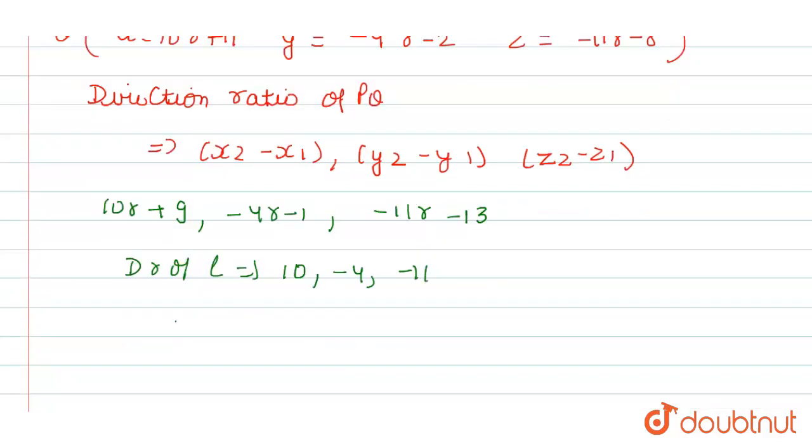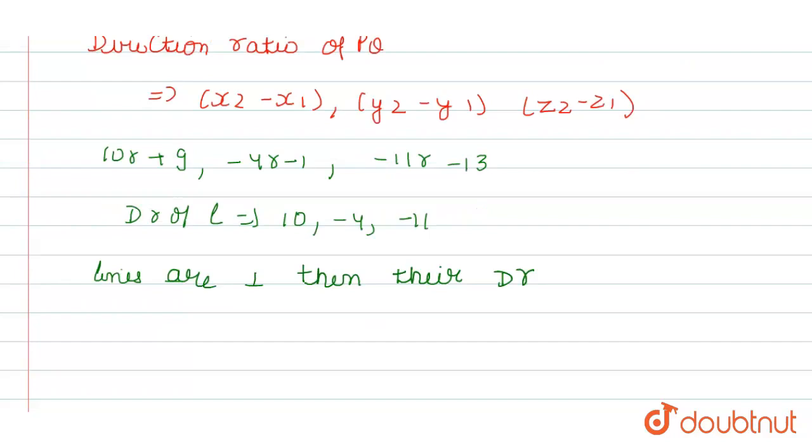Now we have a relationship: when lines are perpendicular to each other, then their direction ratio relationship is A1·A2 + B1·B2 + C1·C2 = 0. So we will use this formula.